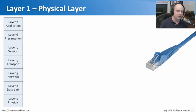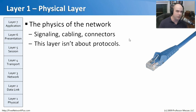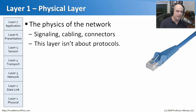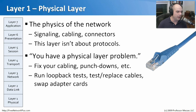At the bottom is Layer 1, the physical layer, which deals with exactly what the name implies — the physics of the network. This is everything at the physical wire level; the part of the OSI model we can actually touch. It deals with signaling, cabling, connectors, and getting the signal from one end of the network to the other. It doesn't deal with protocols per se.